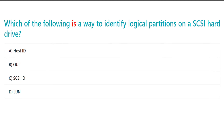Which of the following is a way to identify logical partitions on a SCSI hard drive? A. Host ID. B. WWN. C. SCSI ID. D. LUN.